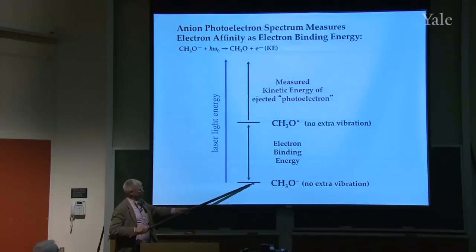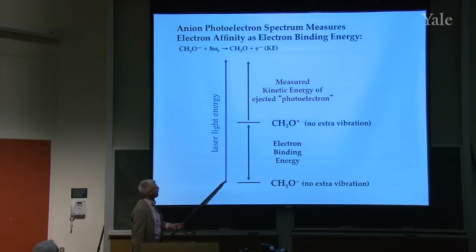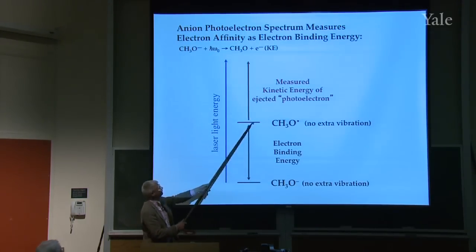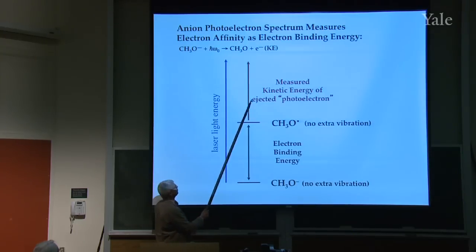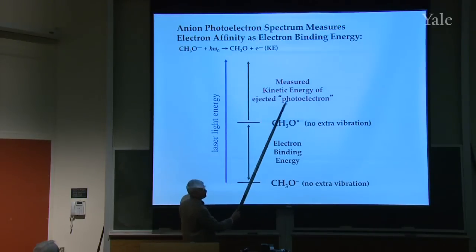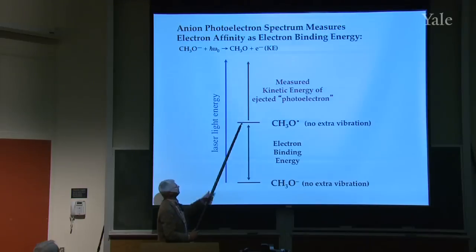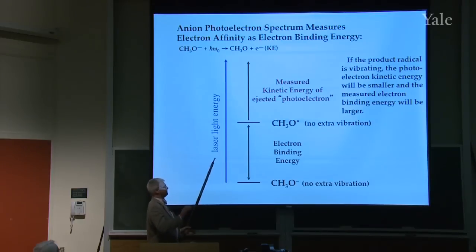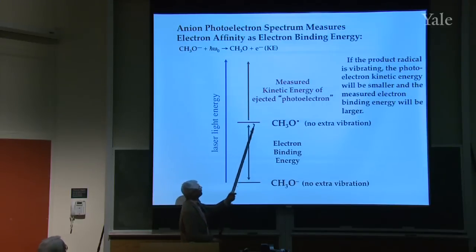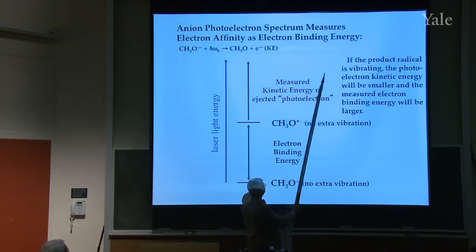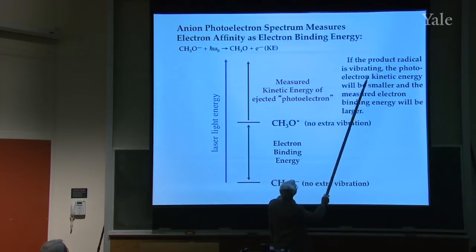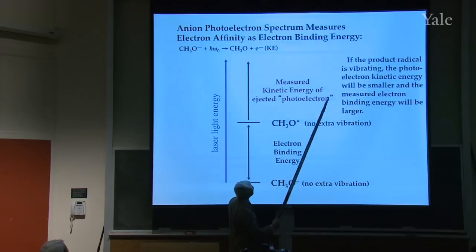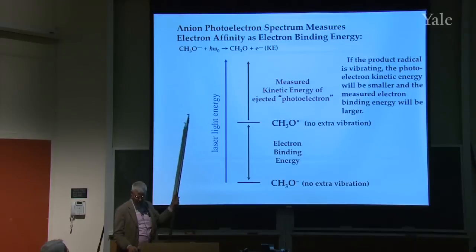Here's the negative ion — when the electromagnetic wave comes blazing in and strikes it, here's the laser energy. The molecule literally interacts with the laser and an electron is knocked off. You're going to measure the kinetic energy of the photoelectron. So if you've measured what comes out, then the difference is the binding energy. This is the essential experiment you have to do. If the product radical is vibrating, then the photoelectron kinetic energy will be smaller than the measured binding energy.